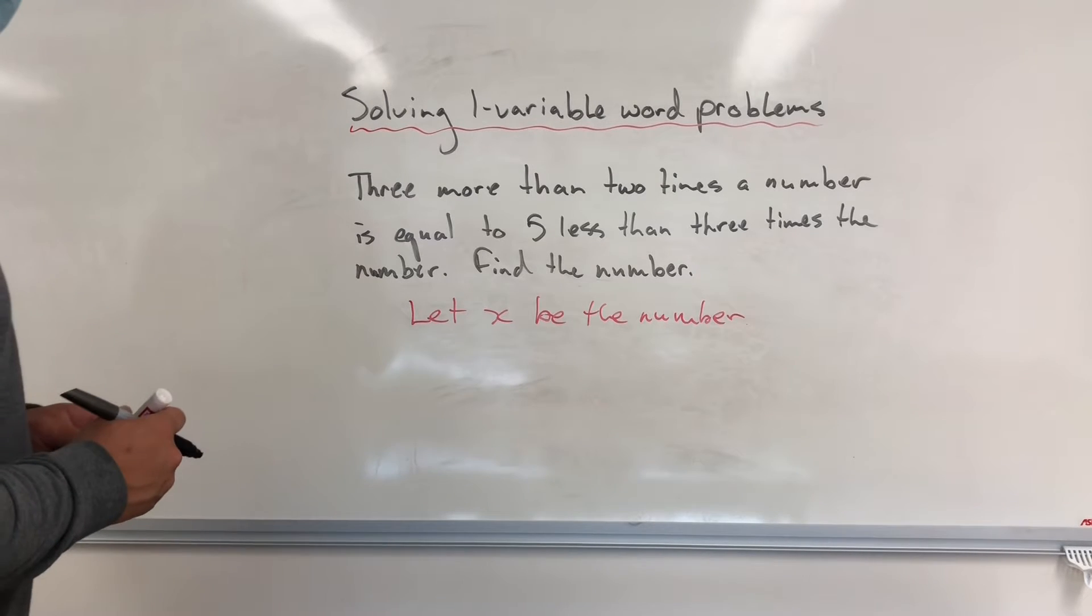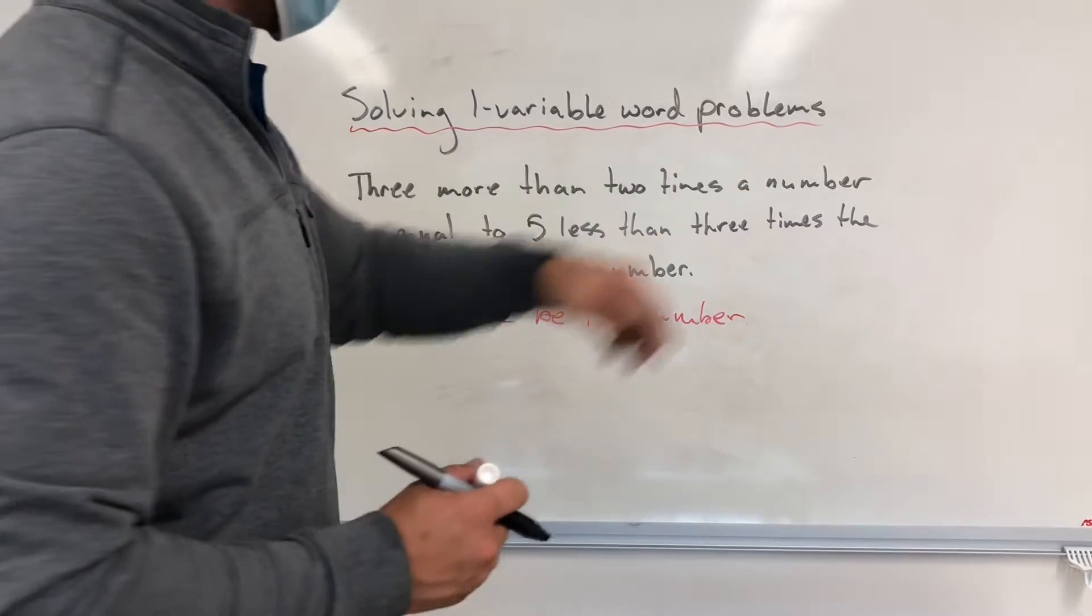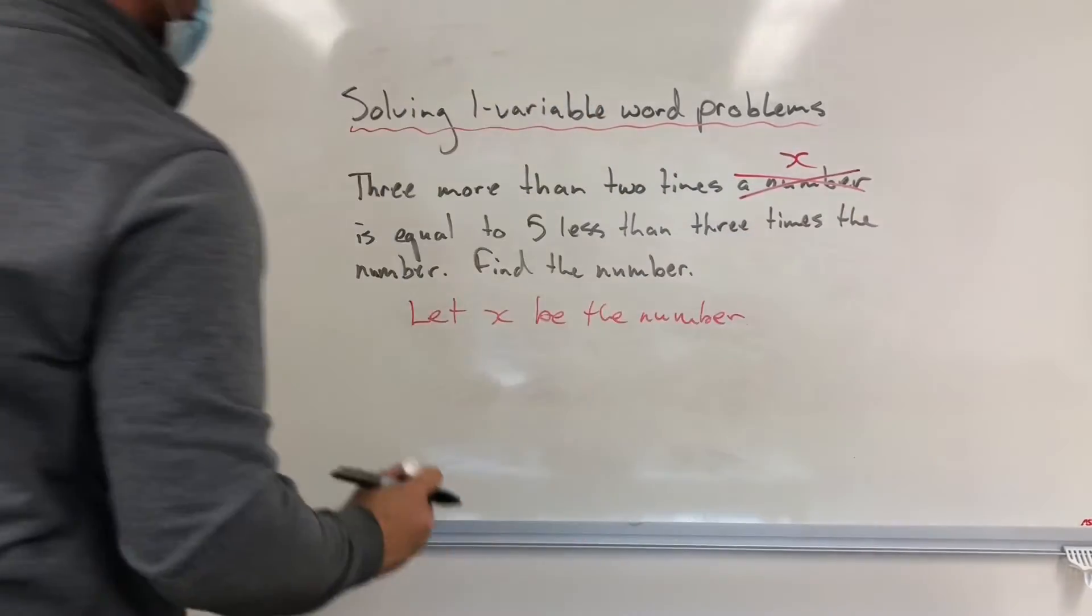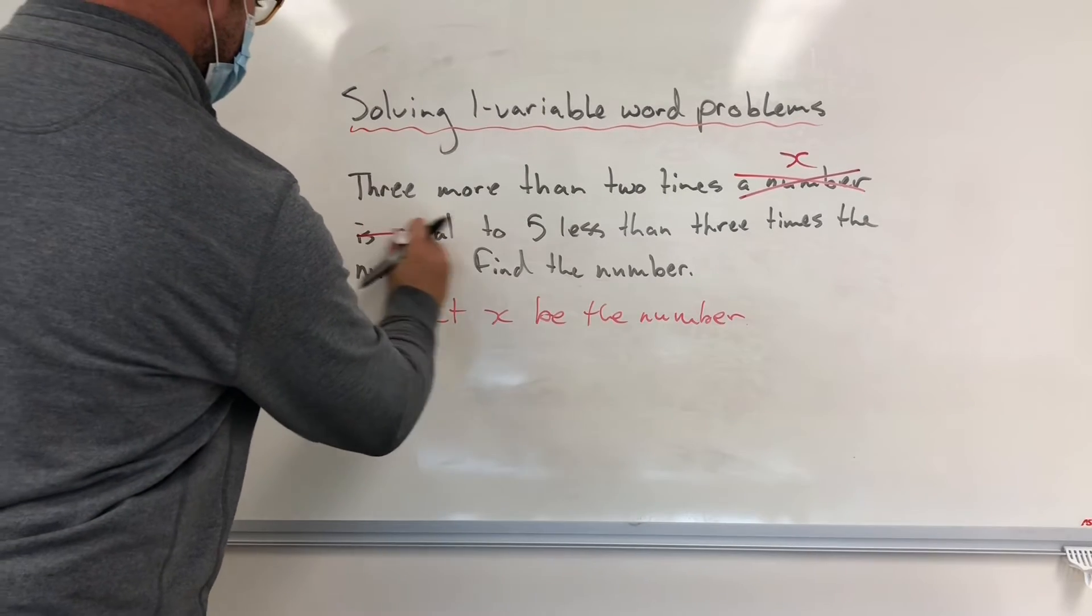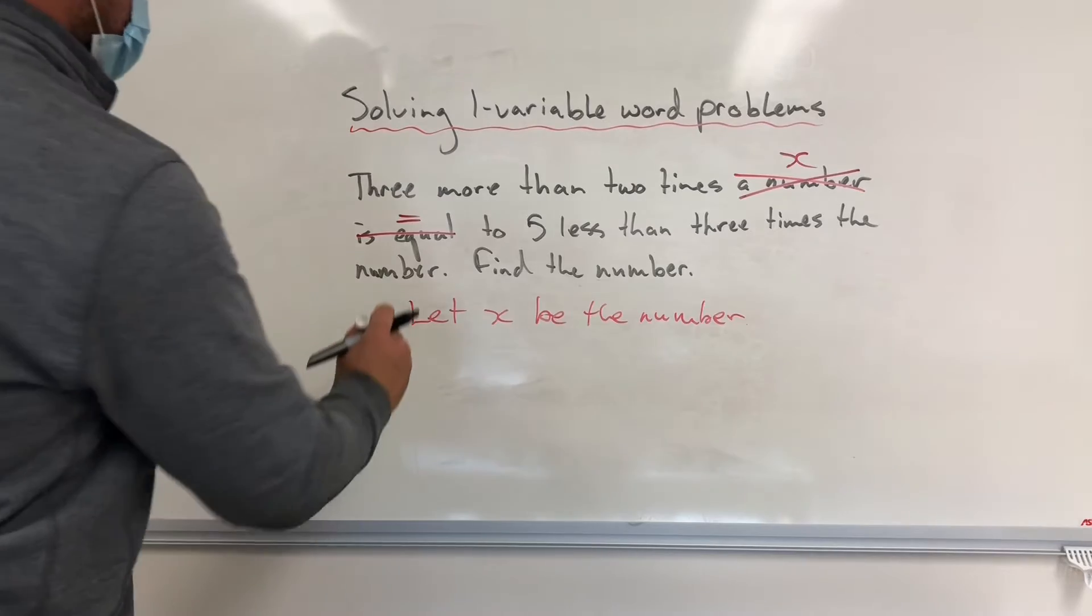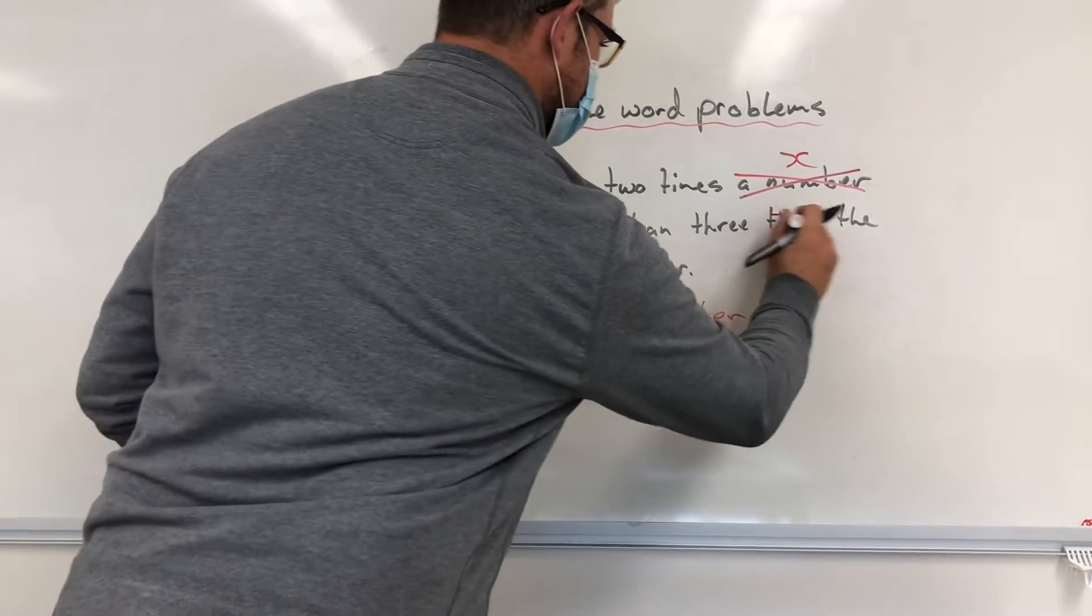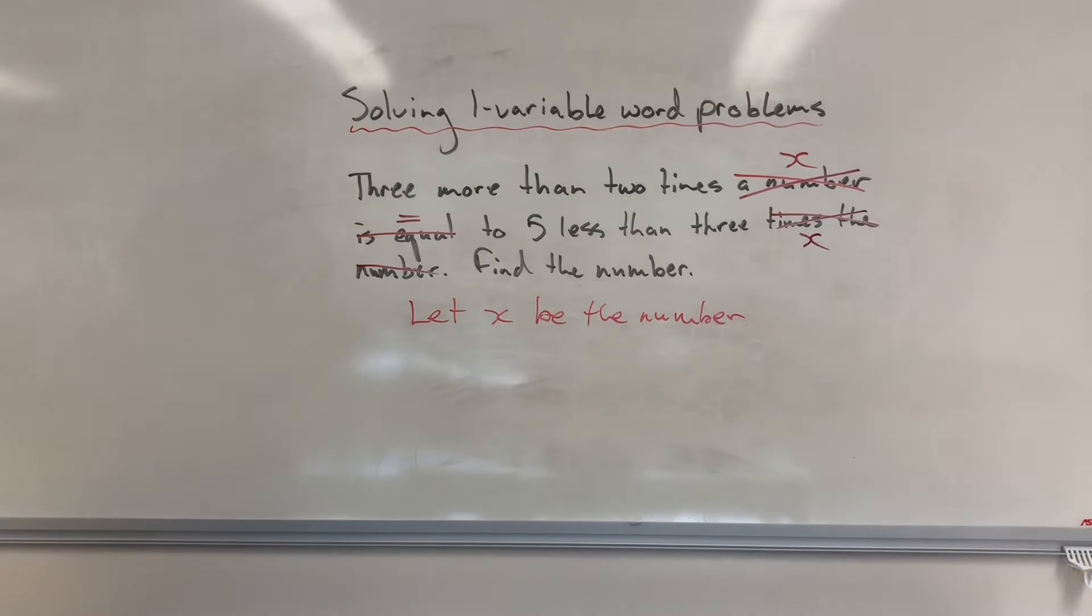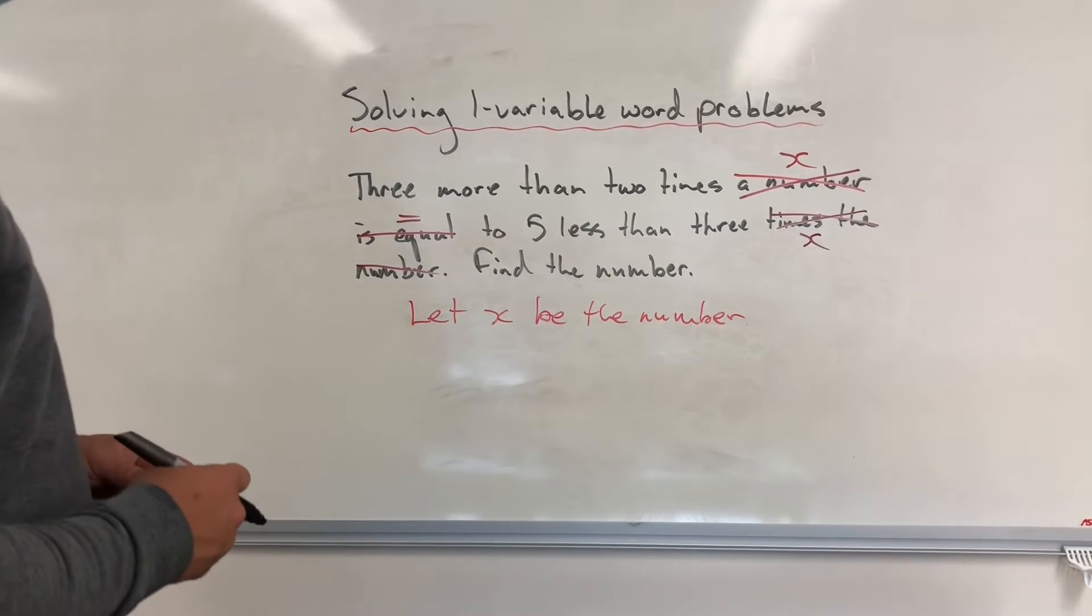The next thing we're going to do is we're going to read through some of the information. So three more than two times a number, or three more than two times X is equal to five less than three times the number. So that's five less than three times X. Five less than three times X. Three more than two times X.